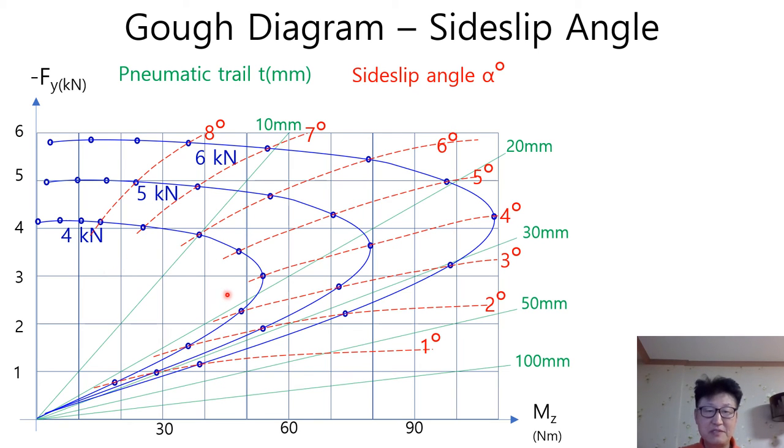This completes the GO diagram. In this diagram, we have the information of lateral force, self-aligning torque, pneumatic trail, side-slip angles, tire normal forces, and so on.